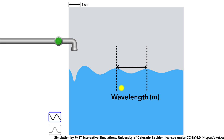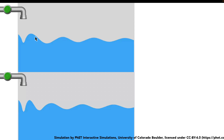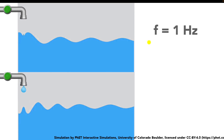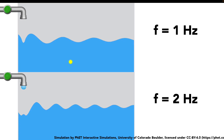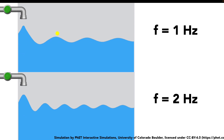Now here's the interesting thing — what happens to the wavelength as we change the frequency? Let's look at the simulation side by side: one hertz on top, two hertz on the bottom. You can see the wavelength is bigger at one hertz — the crest-to-crest distance is much larger than at two hertz. So higher frequency gives smaller wavelength. That's because the speed of the wave is the same in both cases, so if you're cramming more waves in, the distance between them is going to reduce.